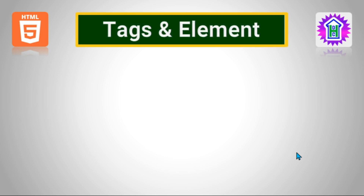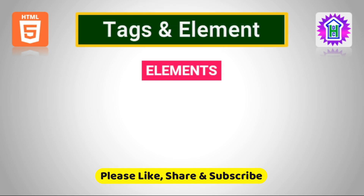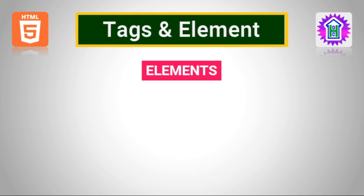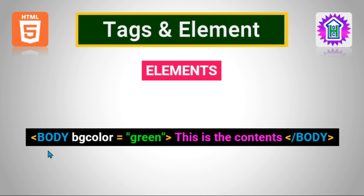Now let us discuss elements. Tags are also sometimes called elements but there is a little difference between a tag and an element. Though tags and elements are used synonymously, an element is everything from the starting tag to the ending tag. That may include the attributes in the starting tag and the content in between the start tag and the closing tag.